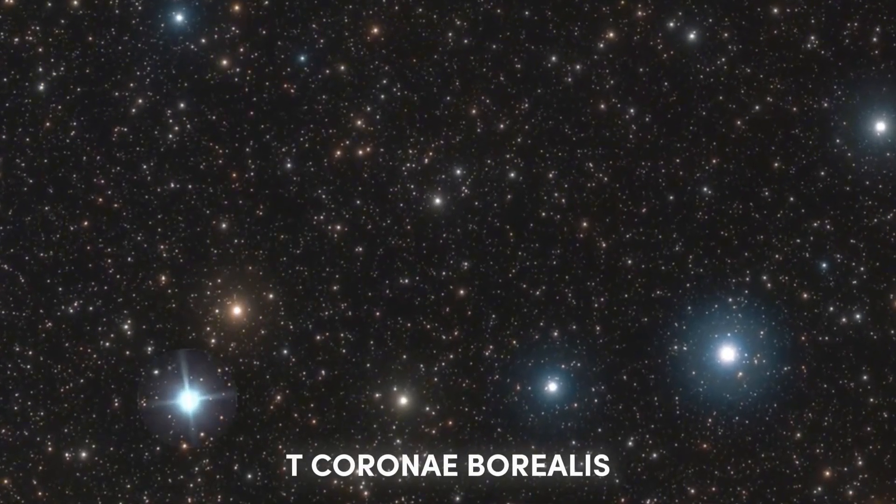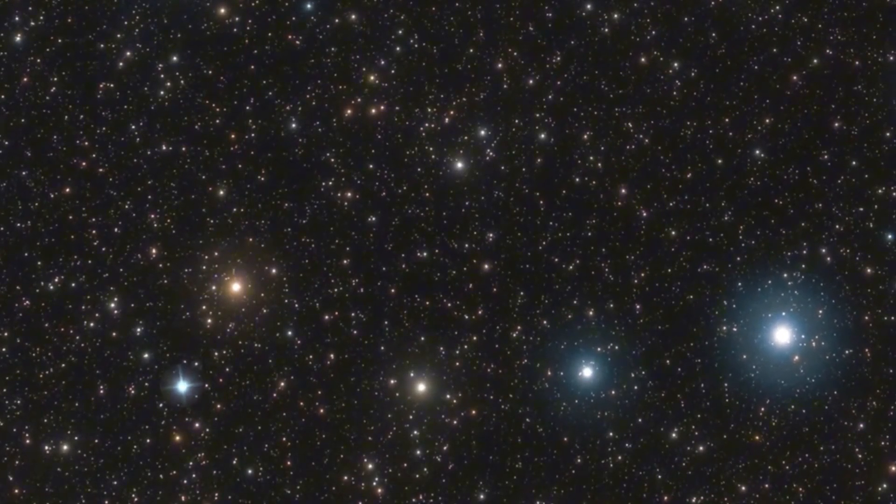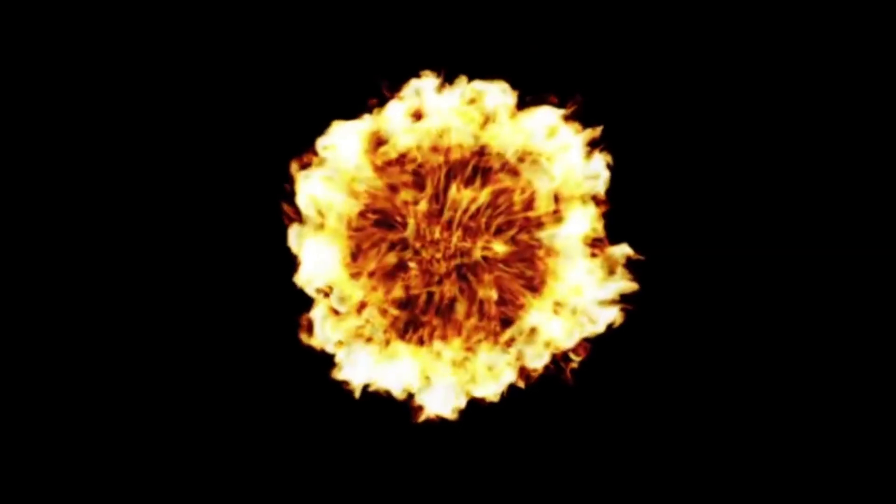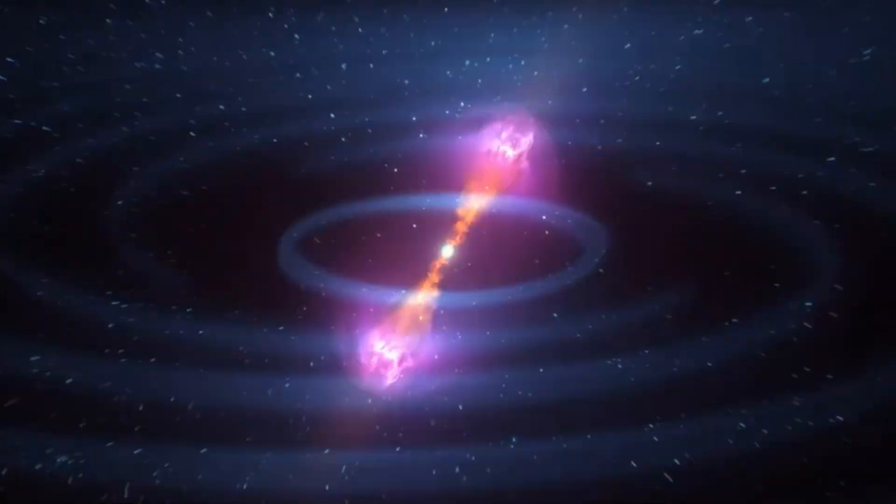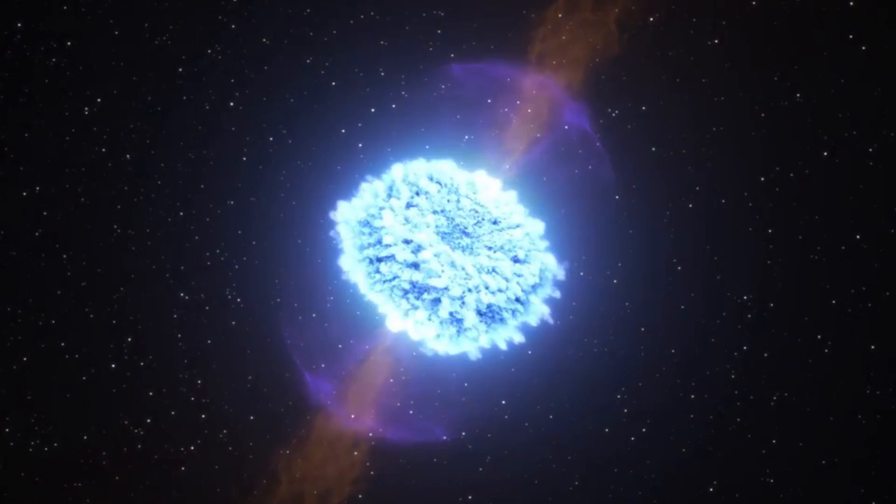T Coronae Borealis, a star system 3,000 light years away, will soon brighten dramatically, creating a spectacular explosion visible to the naked eye. Imagine looking up and seeing the night sky light up with a brilliant flash. So what exactly is going to happen and when?